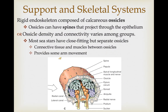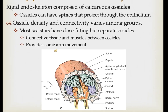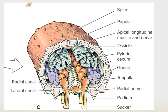The rigid endoskeleton is composed of calcareous ossicles. The ossicles have spines that project through the epithelium, and this is how they get their name — the spiny-skinned animals. The density of these ossicles varies greatly between groups. If you look at the cross-section of a sea star arm, the ossicles are fairly close-fitting but are separate plates with connective tissue and muscles between them, allowing some arm movement, though the tight packing limits flexibility.